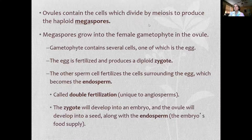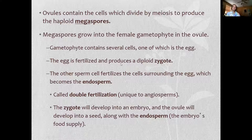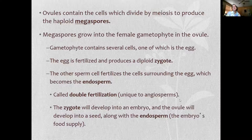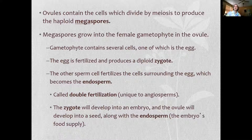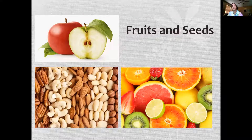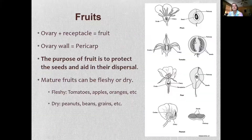Ovules contain the cells which divide by meiosis to produce the haploid megaspores — only one of which is the egg. The egg is fertilized and produces the zygote. The other sperm fertilizes the surrounding cell, which becomes the endosperm — this is called double fertilization, and it is unique to angiosperms. The zygote will develop into an embryo, and the ovule will develop into a seed along with endosperm, the embryo's food supply.